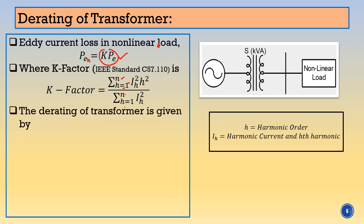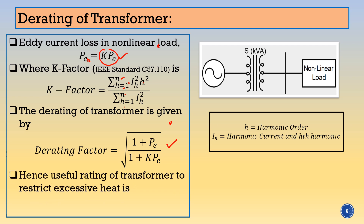The D rating factor is calculated from the eddy current loss, because it is going to impact eddy current loss. The D rating factor = √[(1 + PE) / (1 + K·PE)]. Hence the useful rating of the transformer is restricted. S_useful = D rating factor × S, where S is the rating of the transformer.